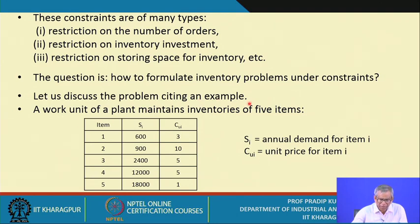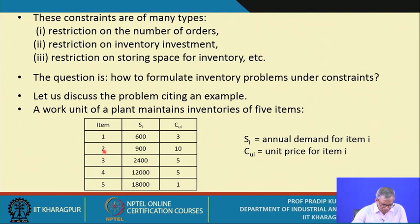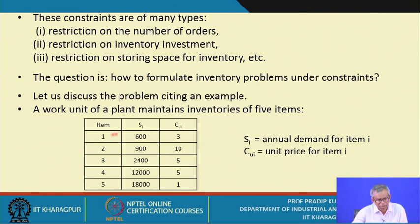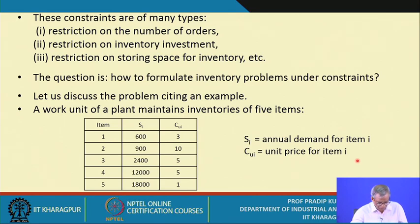Let us discuss the problem by citing an example. A work unit of a plant maintains inventories of 5 items, specified as 1, 2, 3, 4, and 5. SI denotes the annual demand for the ith item, and CUI denotes the purchase price for the ith item. Against each item, the values of SI and CUI are given in the table.